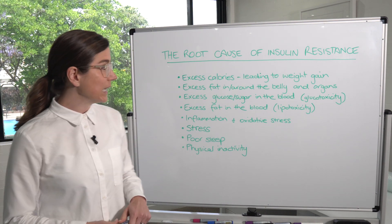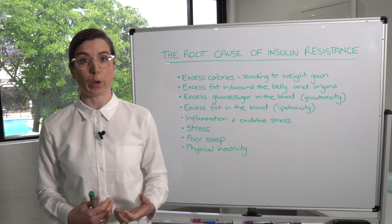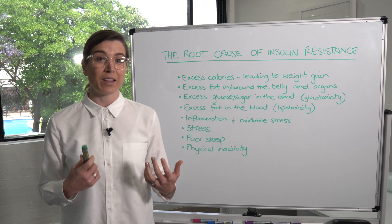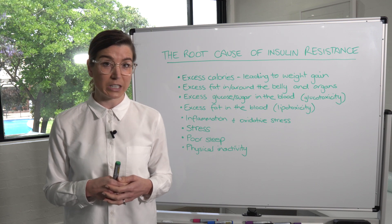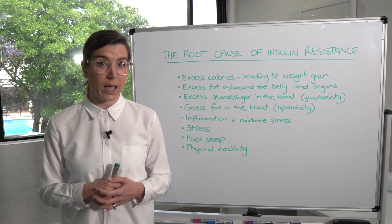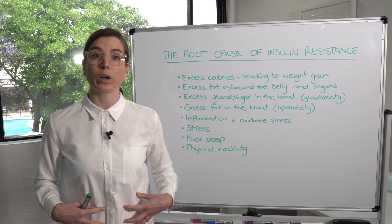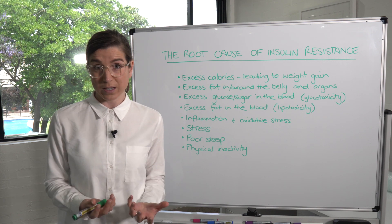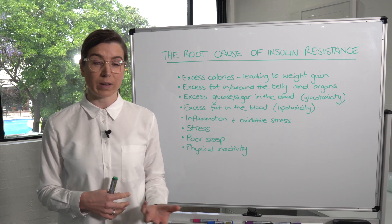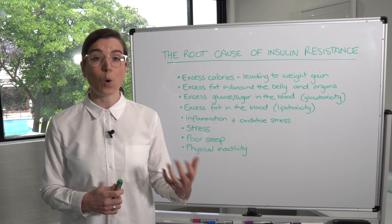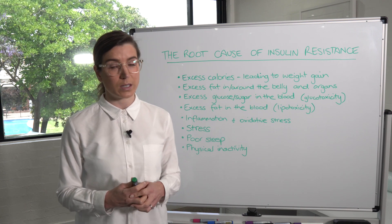Excess fat in and around the belly and the organs: fat will block glucose out of the cells, contributing to insulin resistance. The fat around the belly and organs acts like an organ in itself, releasing inflammatory chemicals and hormones that disrupt the body and contribute to insulin resistance.